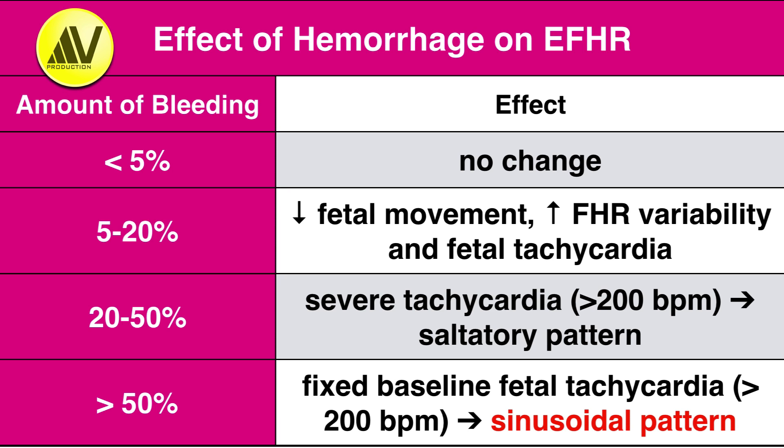However, if the fetal bleeding is greater than 20%, there will be compensatory vasoconstriction to conserve blood to vital organs like heart and adrenals, resulting in severe tachycardia that is greater than 200 beats per minute. This is manifested on the electronic fetal heart rate tracing as a solitary fetal heart rate pattern. The oscillations are of greater than 25 beats per minute with absence of both short and long term variability.